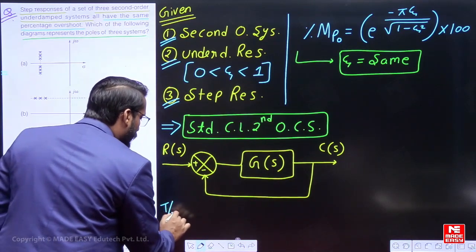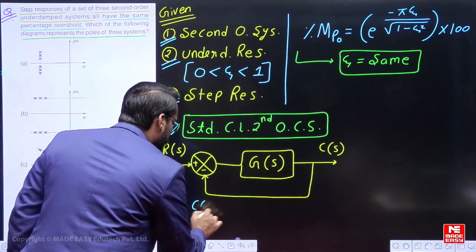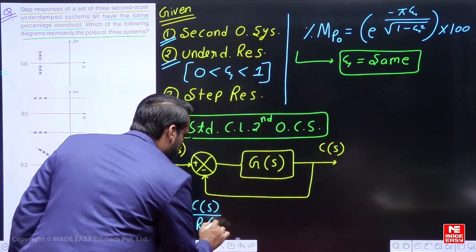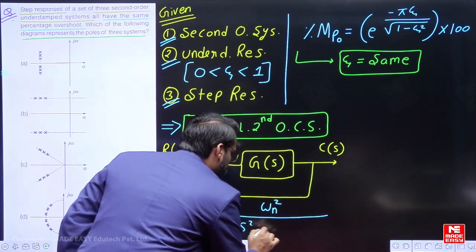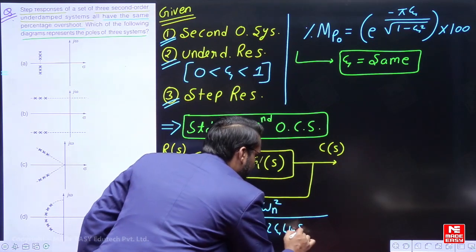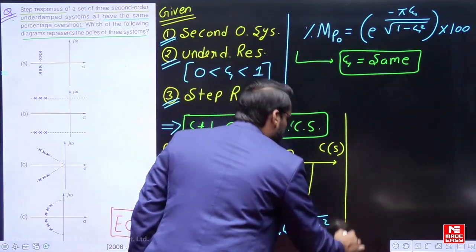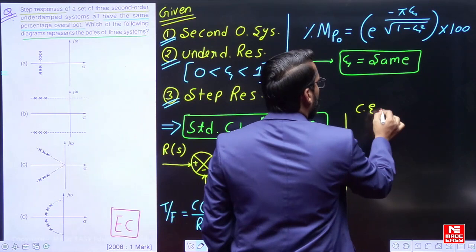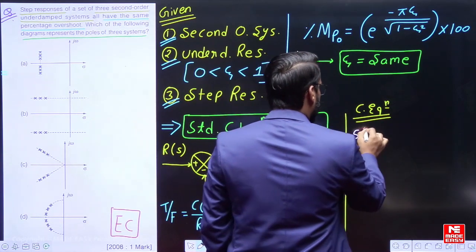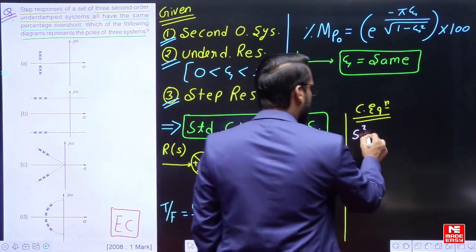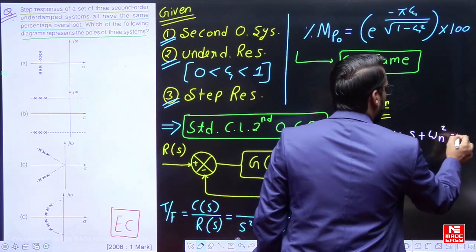What will be the standard transfer function with respect to the closed-loop second-order control system? It is C(s)/R(s) = ωₙ² / (s² + 2ζωₙs + ωₙ²). So what will be the characteristic equation? The characteristic equation is: s² + 2ζωₙs + ωₙ² = 0.